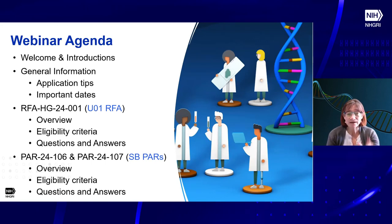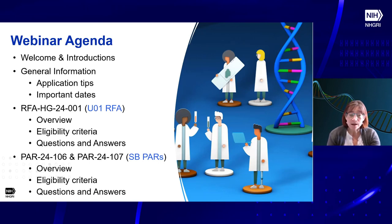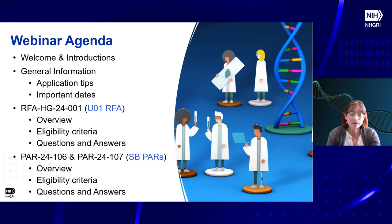I'll give an overview on it, talk about the eligibility criteria, then we'll do questions and answers. After that, we'll then talk about the small business PARs — again, an overview, eligibility criteria and questions and answers. The reason we're doing those separately is that we do want to make sure that if you're getting an answer, you know exactly which opportunity it applies to.